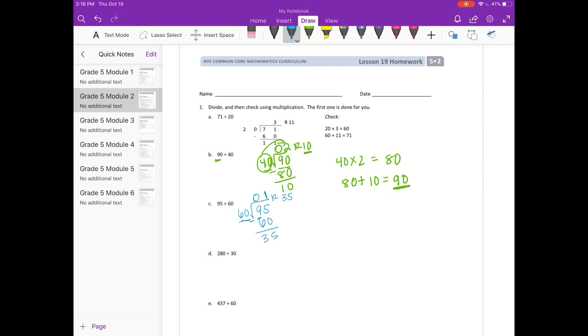So to check, we would do 60 times 1 is 60 plus the 35 should be 95.